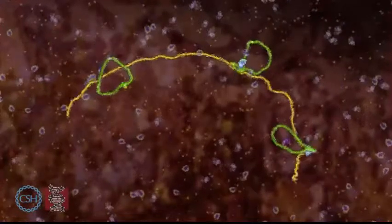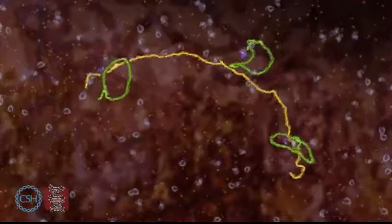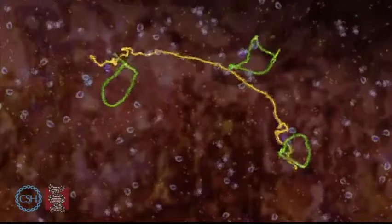In this example, three introns are removed from the RNA to leave the complete instructions for a protein.